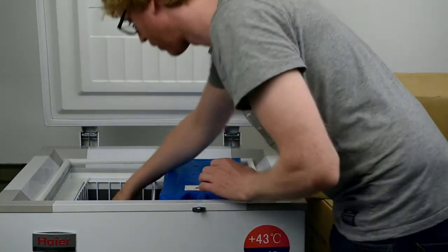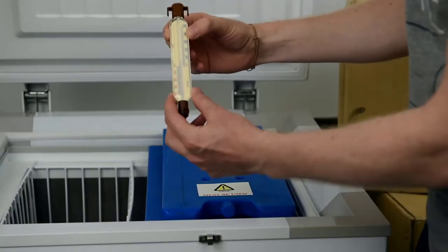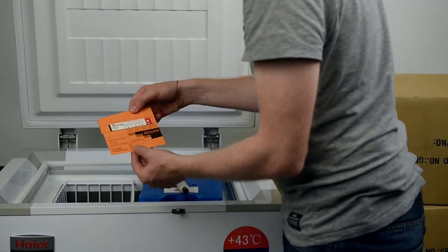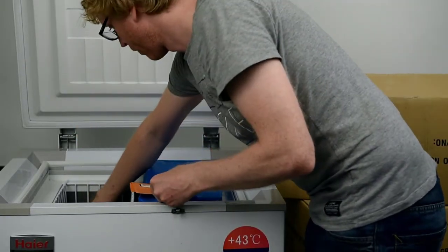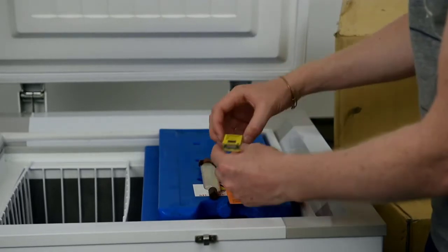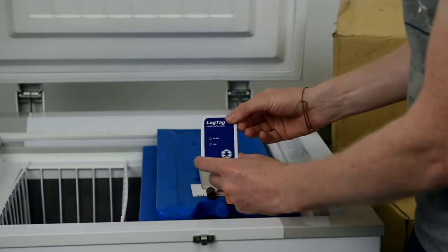First, we need to make sure storage conditions in the fridge the items are stored in are between 2 and 8 degrees. We check the thermometer and that the activated 3M card shows white windows, and that the freeze tag shows a tick mark, not an X. The lock tag with limits of 2 and 8 degrees should be flashing green.